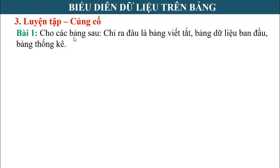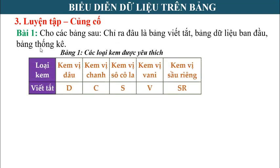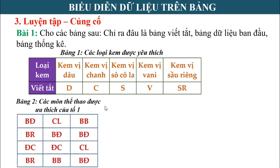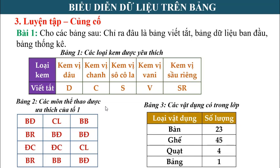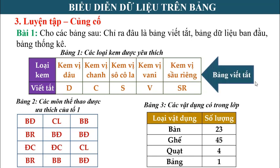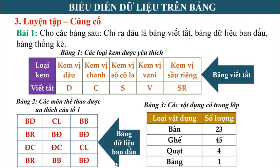Bài tập 1: Cho các bảng sau - bảng thứ nhất về các loại kem được yêu thích, bảng thứ 2 về các môn thể thao được yêu thích, bảng thứ 3 về các vật dụng có trong lớp học. Hãy chỉ ra đâu là bảng viết tắt, đâu là bảng dữ liệu ban đầu và đâu là bảng thống kê. Bảng 1 có 2 dữ kiện là tên gọi và viết tắt, đó là bảng viết tắt. Bảng 2 cho thông tin dưới dạng chữ cái viết tắt, đó là bảng dữ liệu ban đầu. Bảng 3 cho dữ kiện về tên loại vật dụng và số lượng từng loại, đó là bảng thống kê.